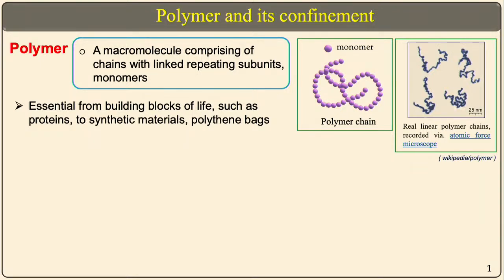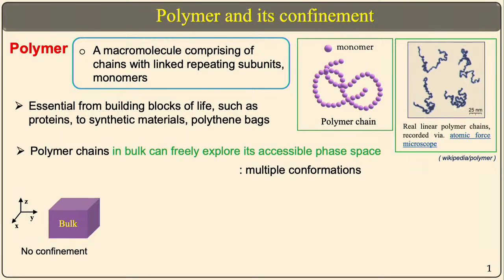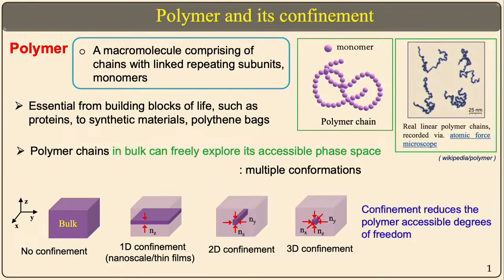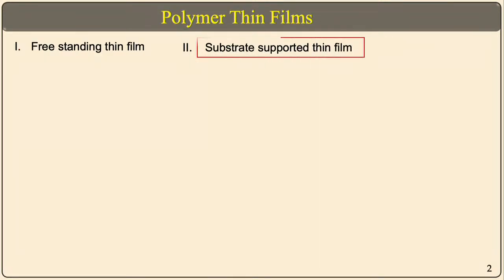The particular aspect I want to focus on is confinement. Polymers in the bulk state can undergo multiple conformations with all three degrees of freedom. However, when we confine polymer chains along the thickness direction — to the length scale of the polymer, like the R_g — they are known as one-dimensionally confined polymer films. Similarly, we can have two-dimensional confinement and three-dimensional confinement, like in nanopores. In this talk I focus on one-dimensional confinement, which can be either freestanding polymer films at nanometer to micron thickness, or substrate-supported polymer thin films.